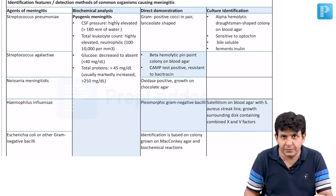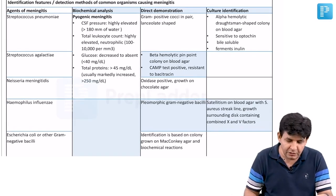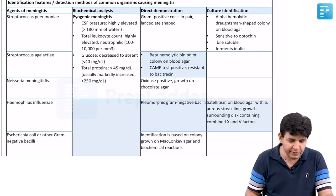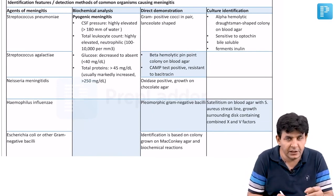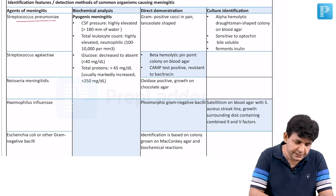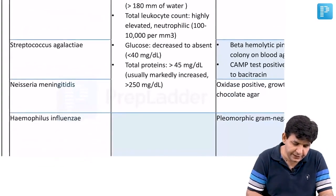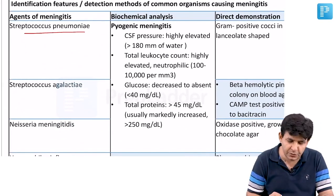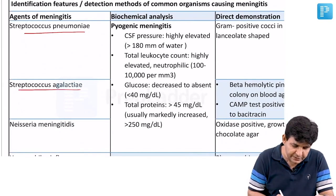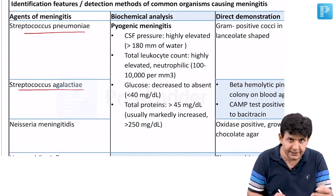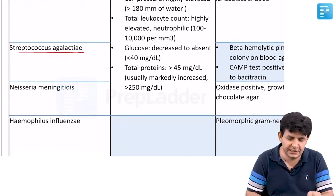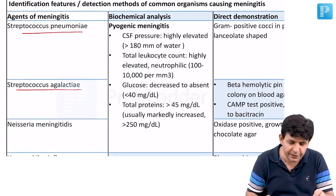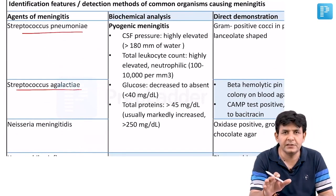There is a table and 100% of questions will come from it. Let's discuss this table quickly - which organisms are important and their features. Streptococcus pneumoniae is pneumococcus, Streptococcus agalactiae is GBS, and Haemophilus influenzae are important ones which cause meningitis.